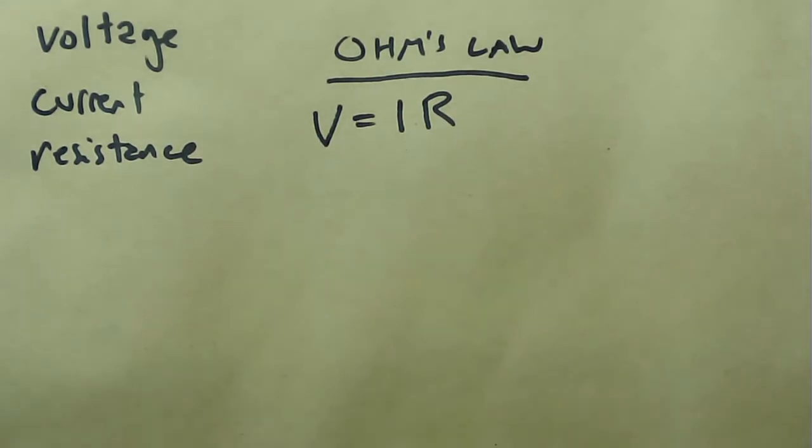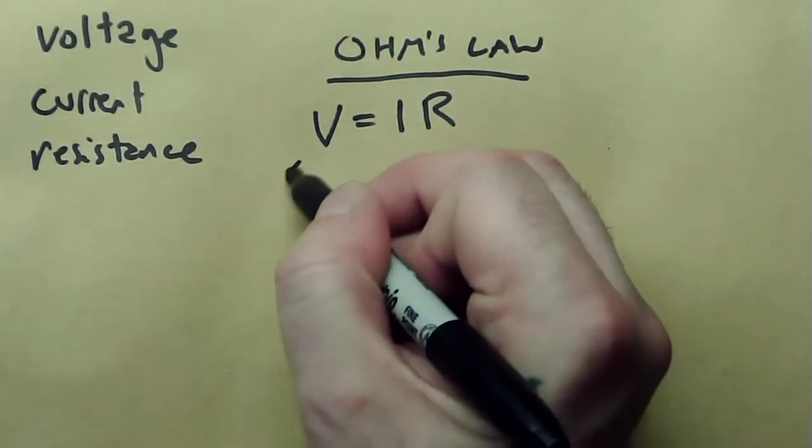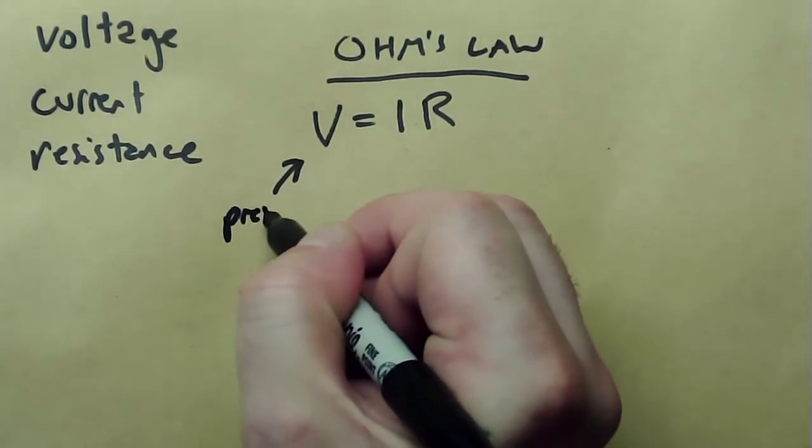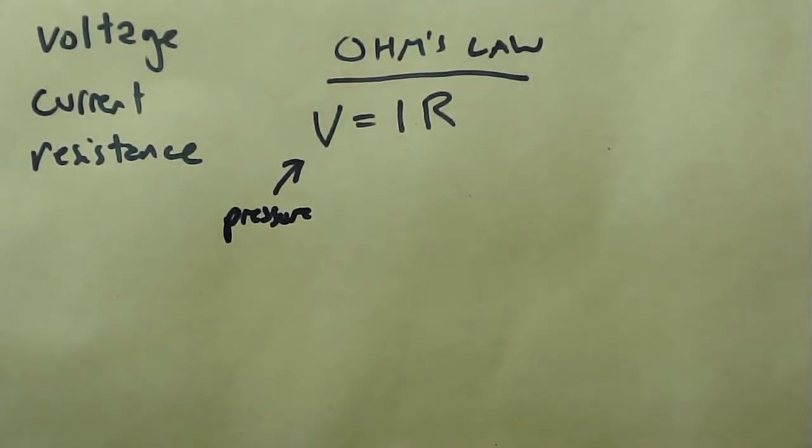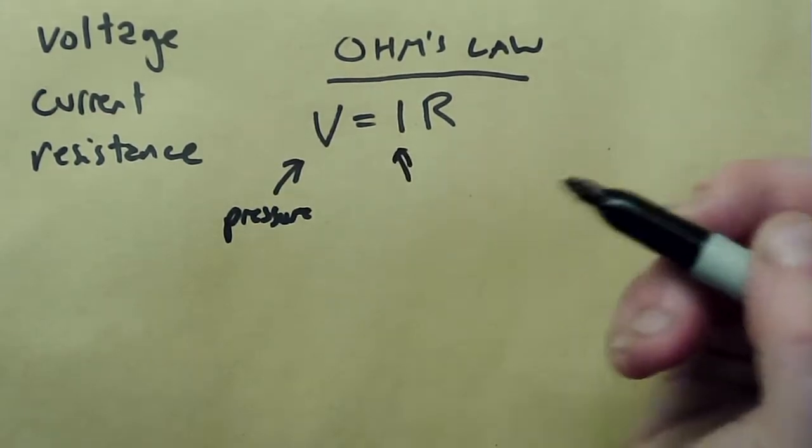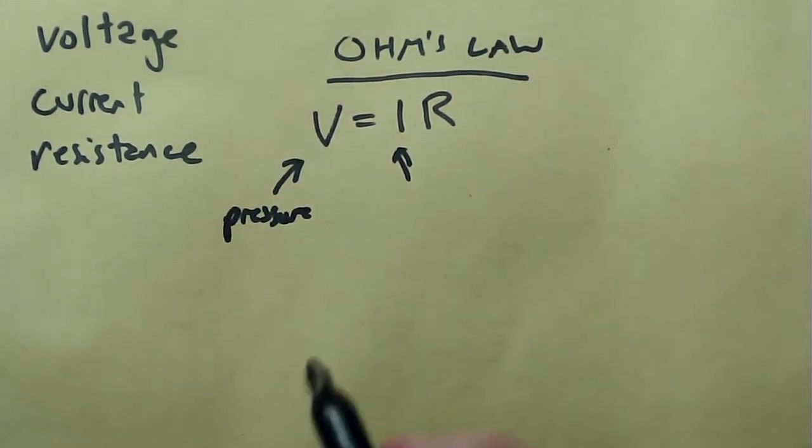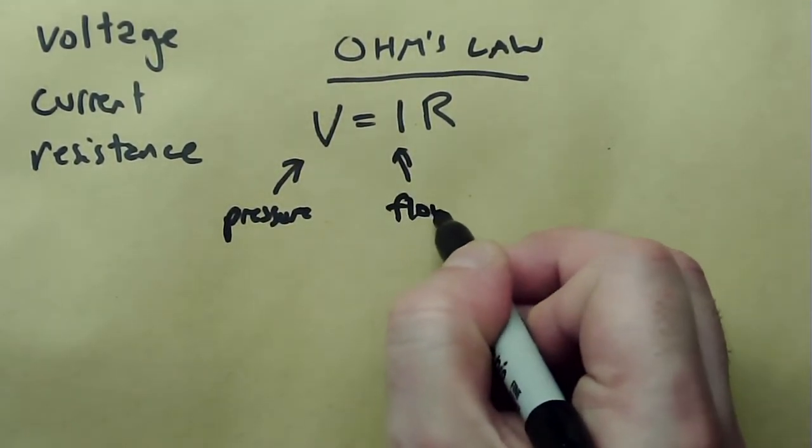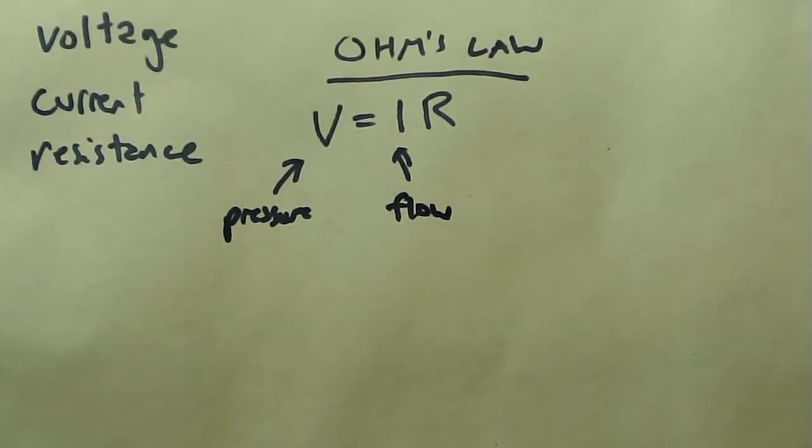So voltage, if we're translating into water, we can think of voltage as pressure. But we can also think about it as elevation. It's a potential energy, just like gravitational potential energy is. Also, current we can think of as flow. Just like we can have a pipe that has a certain amount of water flowing through it, we can have a larger pipe with faster moving water that might have more flow.